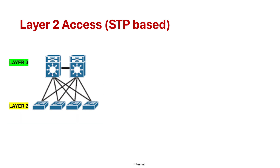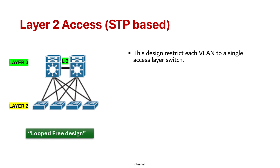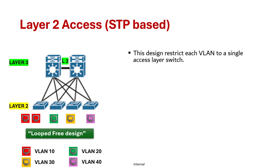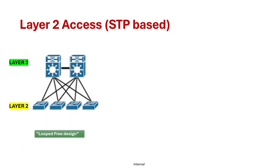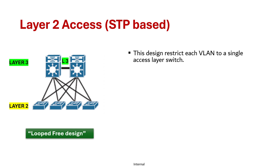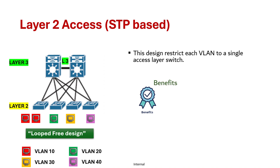There is another type of layer 2 design: the loop-free design. In this design, we restrict each VLAN to a single access layer switch. If you see here, we have four VLANs — 10, 20, 30, and 40 — each restricted to a single switch, so broadcasts stay within that switch and are stopped at the distribution layer. The key difference is that in the loop-free design there is a layer 3 link between the distribution switches, whereas in the previous design there was a layer 2 link. Since we use a layer 3 link, it stops layer 2 broadcasts and there are no loops.